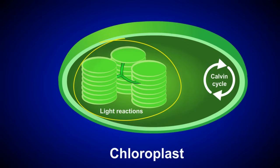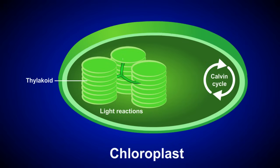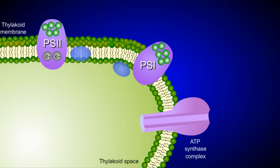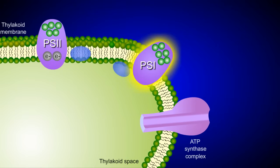The light reactions occur within the thylakoid of the chloroplast. Here, special pigments absorb light energy and transfer it to high energy electrons, eventually producing ATP and the electron carrier NADPH. Let's zoom into the thylakoids to take a closer look at how ATP is created. The light reactions use two photosystems called Photosystem 1 and Photosystem 2.